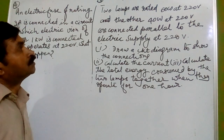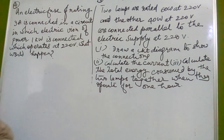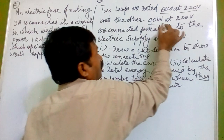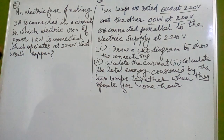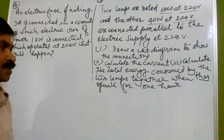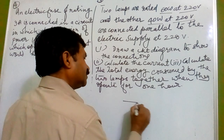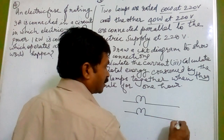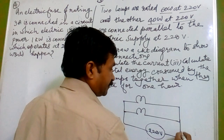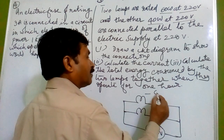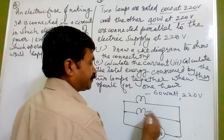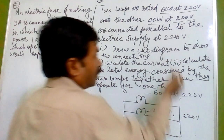We are going to do numericals based on power rating. The rating is given for two lamps: one of 60 watt and another of 40 watt, both at 220 volt, connected in parallel to an electric supply of 220 volt. We draw a circuit diagram showing both lamps connected in parallel with the 220 volt supply — one lamp rated 60 watt at 220 volt and the other rated 40 watt at 220 volt.